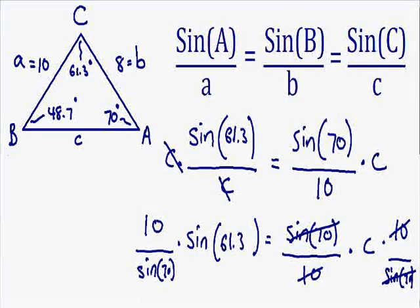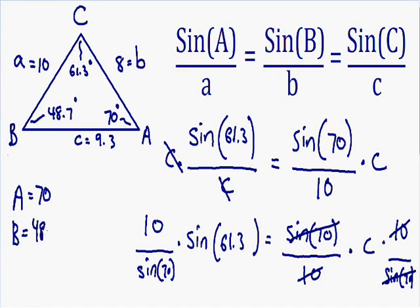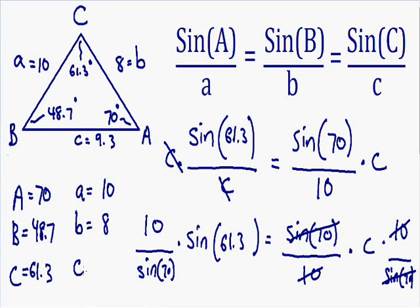We have now solved our triangle completely. Angle A is 70 degrees, angle B is 48.7 degrees, angle C is 61.3 degrees, side A has a length of 10, side B has a length of 8, and side C has a length of 9.3. I hope you enjoyed this video. I'll be making a video on the law of cosines coming up, so stay tuned, and I'll see you in my next video.